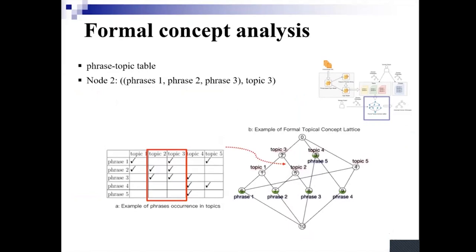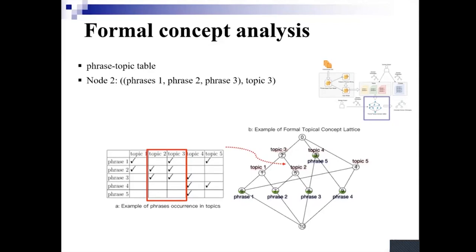In our second step, the formal concept analysis phase, we use a topic-phrase table. For instance, in this table we can see that topic 2 is represented by phrases 2 and 3, and topic 3 is represented by phrases 1, 2, and 3. Comparing these sets of phrases allows us to conclude that topic 3 is actually more specific than topic 2, and thus we could suggest a hierarchical relation between these two topics. The domain expert will then need to validate this. The remainder of the talk will not revisit this stage, because in the two experiments we did, the first experiment didn't find new knowledge beyond the first step, and for the second experiment we actually didn't reach this phase yet.